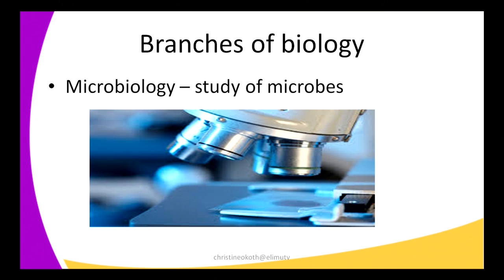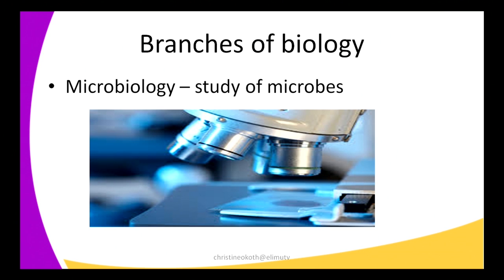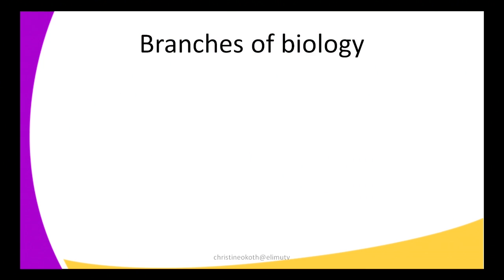The next branch of biology is microbiology — the study of microbes. Microbes are tiny organisms found in our environment that we cannot see with our eyes but can see using a microscope. Examples of these microbes are bacteria, viruses, and fungi. We study what important things these microbes do — some cause harm, for example cholera is caused by a bacterium called Vibrio cholerae. But there are also beneficial things that microbes do to our body. We study both the benefits and the harmful effects under microbiology.